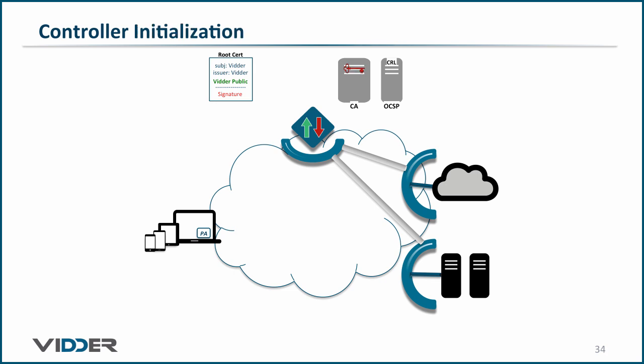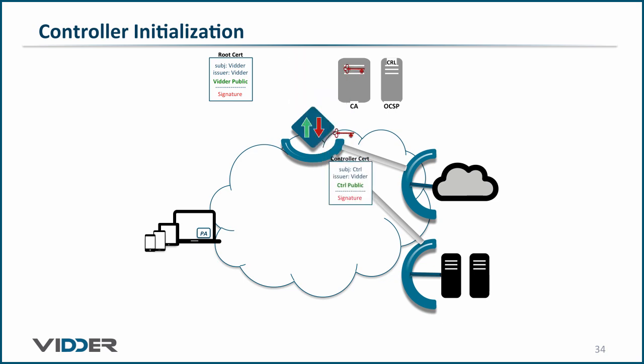Next, we set up the controller. The controller generates a key pair and issues a certificate signing request to the CA by sending the controller's public key to the CA. The CA generates a certificate with a subject name of the controller and the issuer being the CA. The CA puts the controller's public key in the certificate, hashes the certificate, and encrypts the hash with the CA's private key. The CA returns the certificate to the controller and sends the CA's root certificate to the controller too. The latter is the root of trust for the PKI environment.